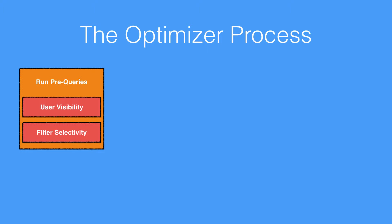How does the optimizer work? It's a multi-step process. The first thing it does is run some pre-queries on user visibility and filter selectivity. It uses a bunch of pre-computed statistics that help decide the best way to retrieve the data. Things like the row count are pre-calculated for that object, and the owner count to allow owner field queries to run really efficiently for reports. User visibility statistics are also stored so the optimizer can understand how many records could be retrieved by a particular user running a particular query.